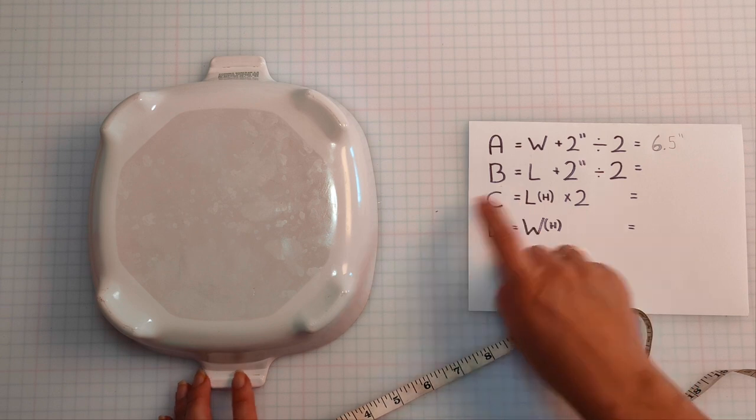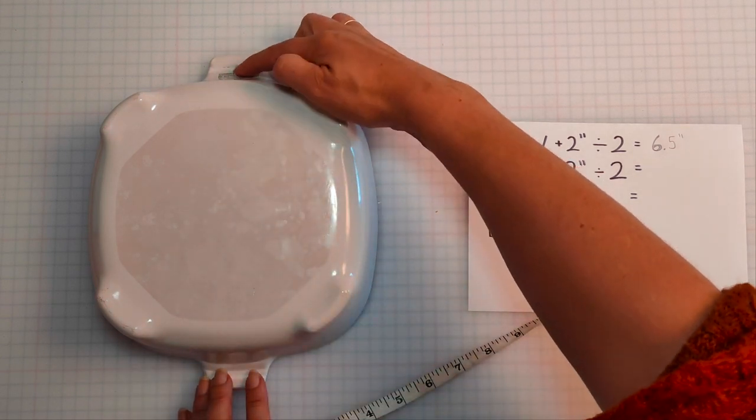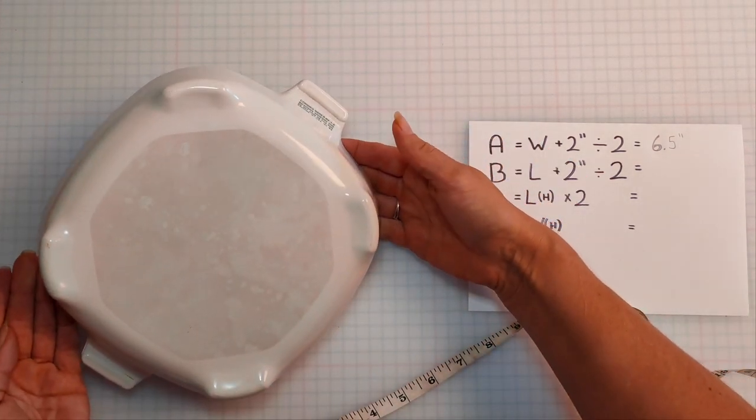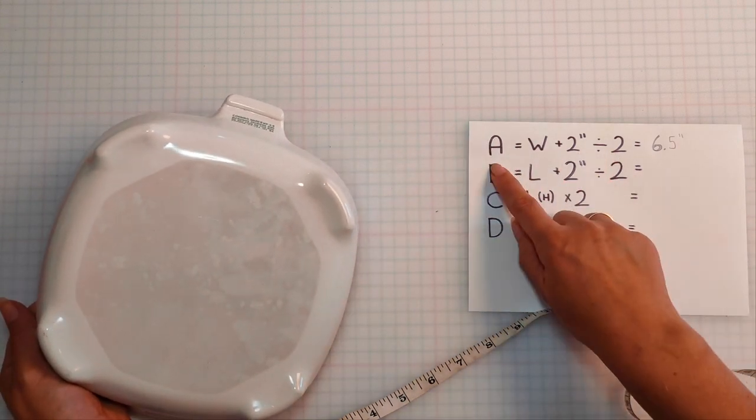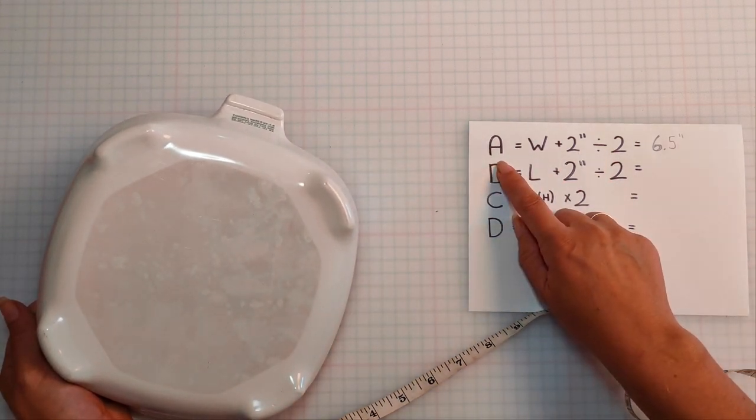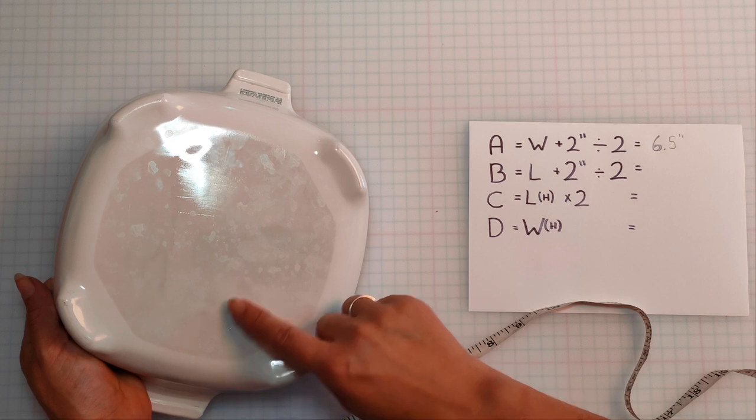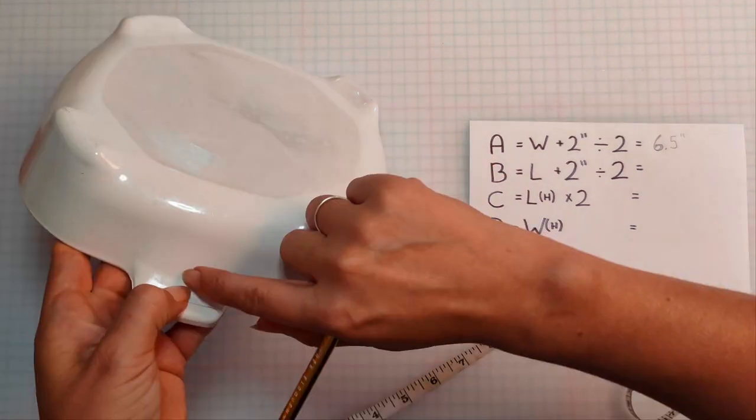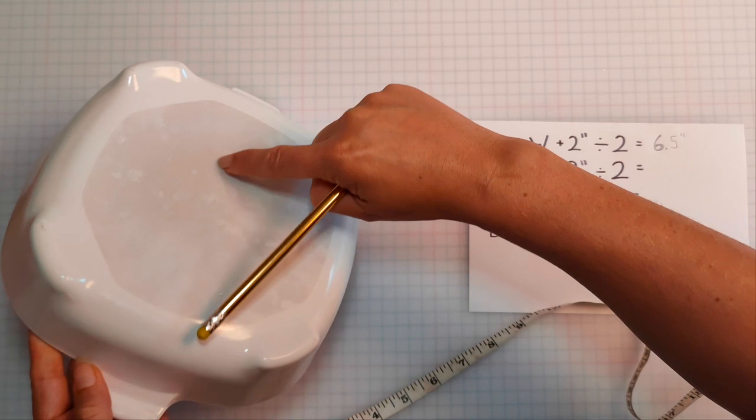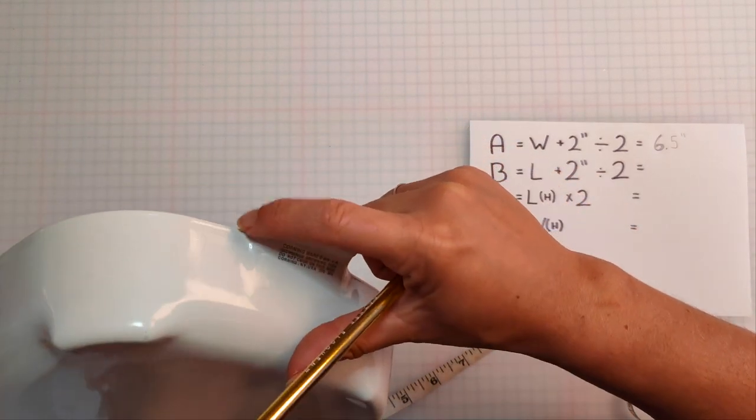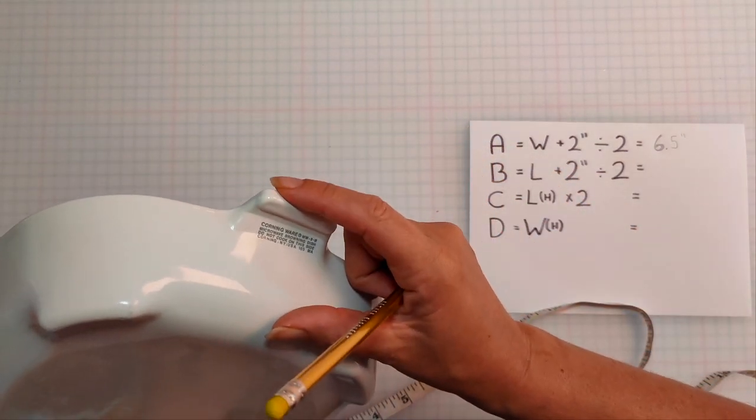My second measurement is the length of my casserole dish. Now my casserole dish is square so it's actually going to be the same as my first measurement but if it wasn't, if it was rectangular, this measurement would be longer. Measure it from the edge here all the way across the back to the edge here. Don't include the handle at this time.